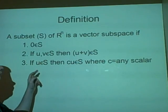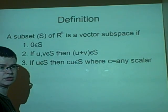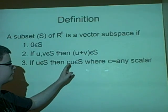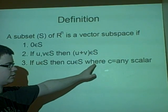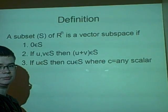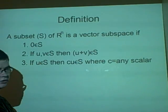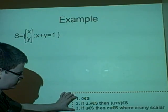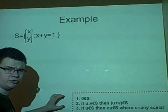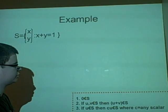And finally, if u is an element of S as a matrix, then cu is an element of S. So, c is any multiple, so you can times u by anything and it should work in S. Now, all we have here is just a few examples, and I've put the rules at the bottom here. I'm not sure whether you can read them, because it might be a bit small, but they're there.